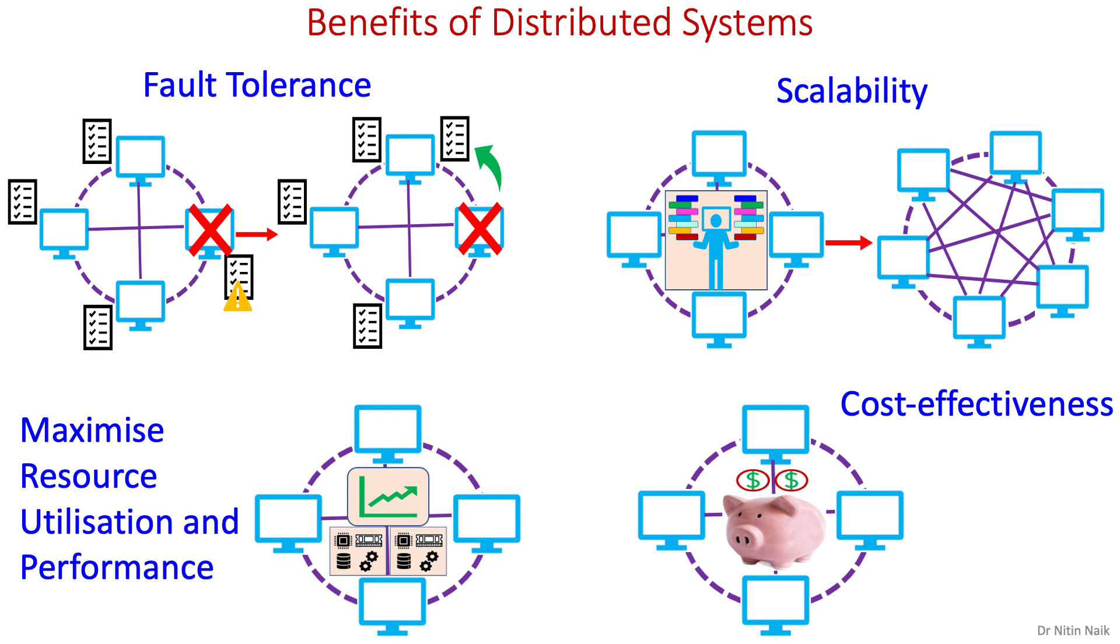Another benefit of distributed systems is cost-effectiveness. Distributed systems are typically designed using low-cost commodity hardware, therefore making it very economical to scale as and when required. However, the initial implementation cost of distributed systems is higher than traditional and centralized systems, but due to their scalability, they quickly become more cost-effective.